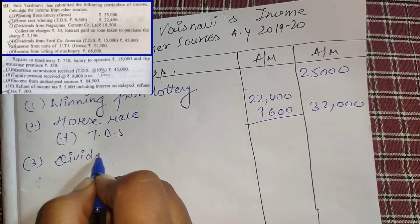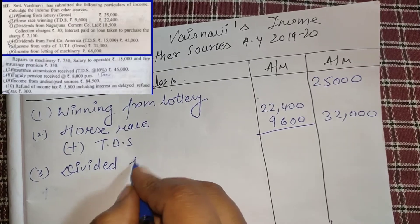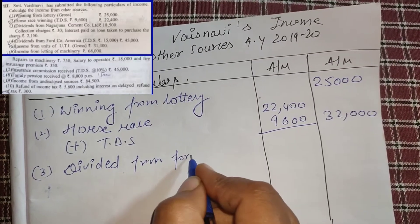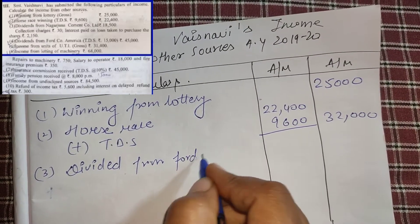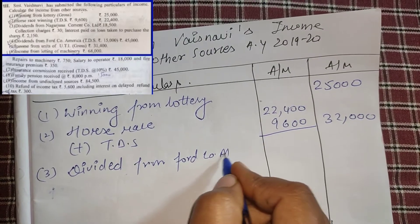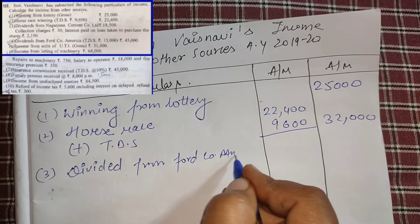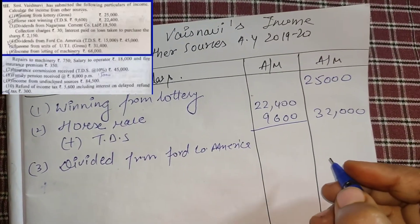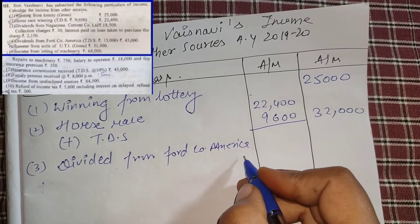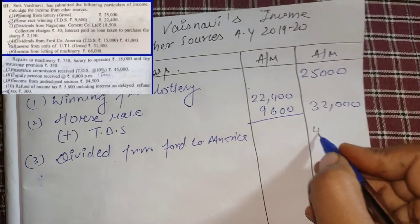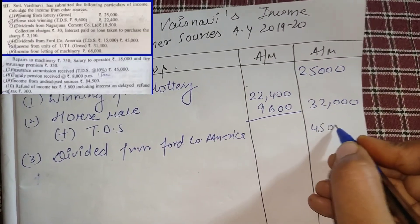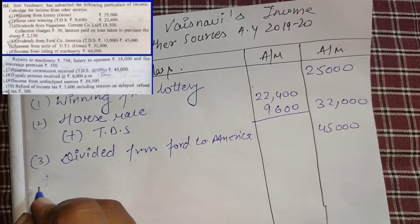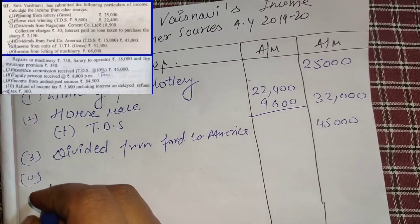This is a foreign income, so we will have 45,000. TDS is not received in this case. We will always take the net value for foreign companies, so the net value is 45,000.